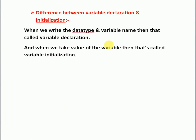Next, the difference between variable declaration and initialization. Variable declaration means you write a data type and variable name but do not assign a value — for example: int a; That is declaration only. Variable initialization means you also provide the value of the variable — for example: int a = 10; When we write the data type and variable name, that is called variable declaration. When we assign a value to the variable, that is called variable initialization.